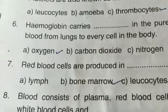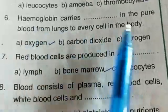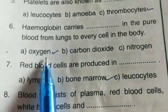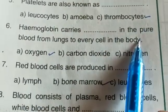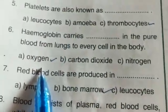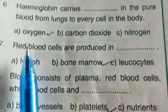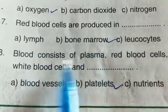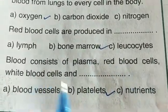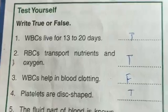Hemoglobin carries oxygen in blood, so that answer will be correct. Pure blood carries oxygen and nutrients from the lungs to every cell, while impure blood carries carbon dioxide and nitrogenous waste. Red blood cells are produced in the bone marrow, and blood consists of plasma, red blood cells, white blood cells, and platelets.